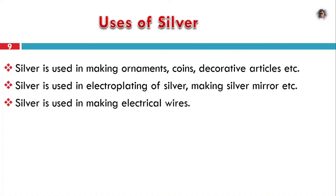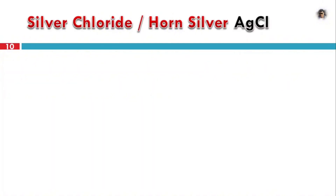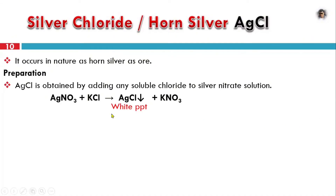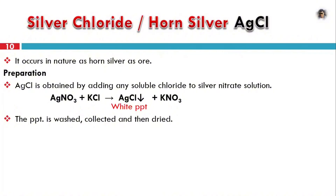Silver is also used to make wires in electrical appliances. Next we discuss important silver compounds. We will cover silver chloride (AgCl) and silver nitrate (AgNO3). Preparation of AgCl: in the lab, we treat soluble chlorides — NaCl and KCl — with AgNO3 to get AgCl white precipitate. We then wash, collect, and dry it.